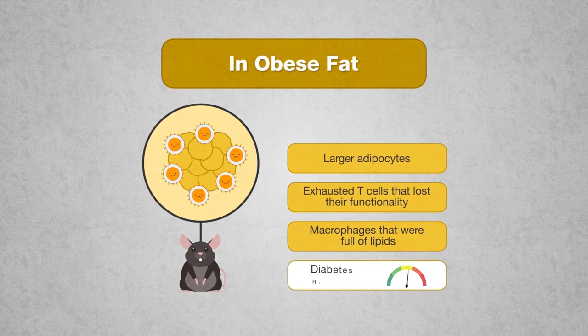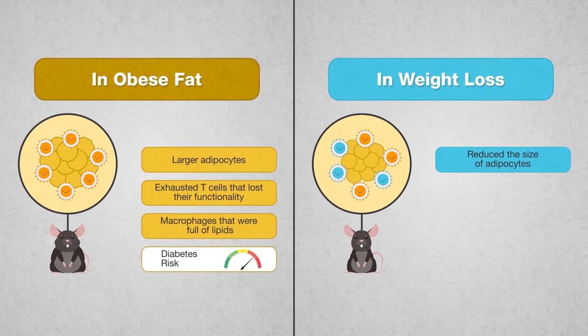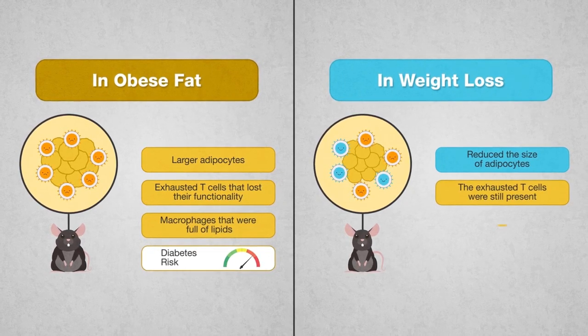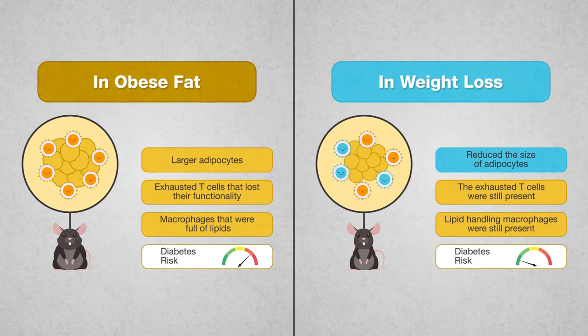Weight loss reduced the size of adipocytes, but surprisingly, the exhausted T cells and lipid-handling macrophages were still present, and diabetes risk was reduced.